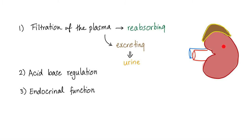And now the kidney — the kidney is king. It filters the plasma: some of it will be reabsorbed, and the rest will be excreted in urine. The kidney also handles acid-base regulation to regulate the pH of your blood, and has some endocrine function as well.